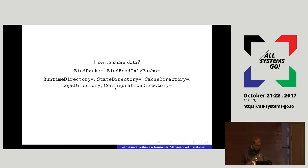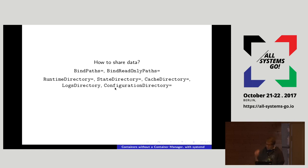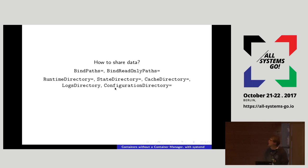Pretty much related to this is a set of relatively new systemd features: RuntimeDirectory, StateDirectory, CacheDirectory, LogsDirectory, and ConfigurationDirectory. Usually if you ship your service as a bundle containing only the OS executables, you still want changeable data on the host system — runtime data like an AF_UNIX socket, a state directory where your service can persist data, a cache directory for non-essential data, a logs directory, and a configuration directory.